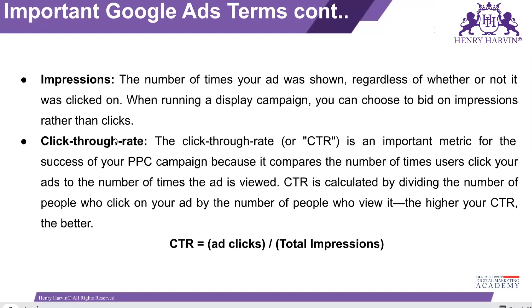Click-through rate (CTR): we talked about the number of times people click. So click-through rate is the number of clicks you get divided by the total number of impressions. Simply: CTR equals number of clicks divided by total impressions.